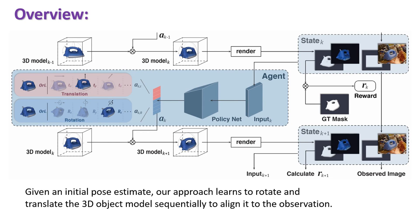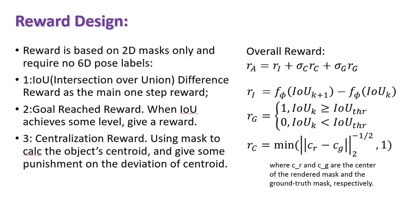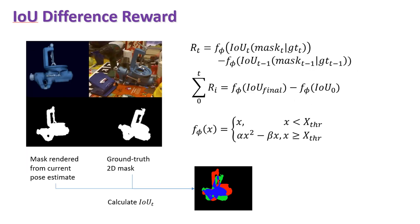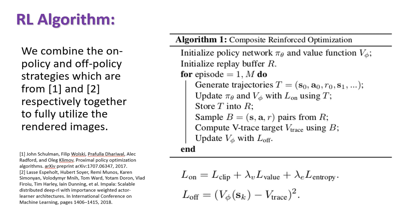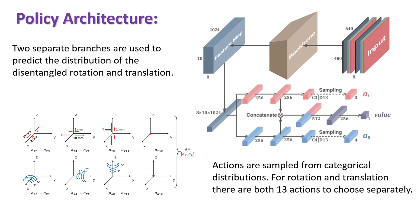Given an initial pose estimate, our approach learns to rotate and translate the 3D object model sequentially to align its 2D mask to the observation. We design three kinds of 2D mask-based rewards for delicate policy update. We also propose a composite-reinforced optimization method to learn the operation policy efficiently and effectively. We use a disentangled policy architecture to predict the rotation and translation separately.